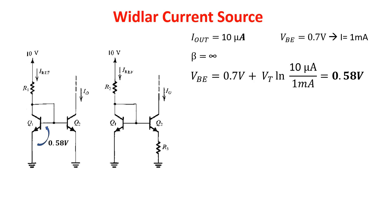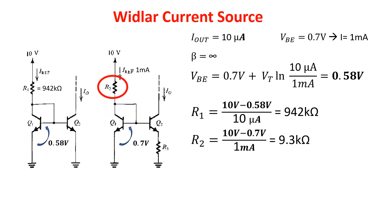Knowing that VBE is 0.58V, we can get R1 which is equal to 942 kilohms, a large value for an integrated circuit. Using the Widlar current source on the right, we can leave VBE1 at 0.7V getting IREF equals 1 milliamp. So, R2 is equal to 9.3 kilohms and R3 is equal to 11.5 kilohms. You can see we obtain a current of 10 microamps using resistors around 10 kilohms instead of 1 megohm.